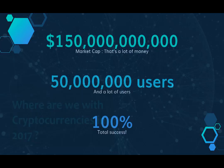Where are we with cryptocurrencies now in 2017? Around 150 billion dollars is the market capitalization of all cryptocurrencies taken together — Bitcoin, Ether, Ripple, Litecoin, and many others. There are approximately 50 million regular users of cryptocurrencies, so we can say that cryptocurrencies have been a very successful technological advancement.